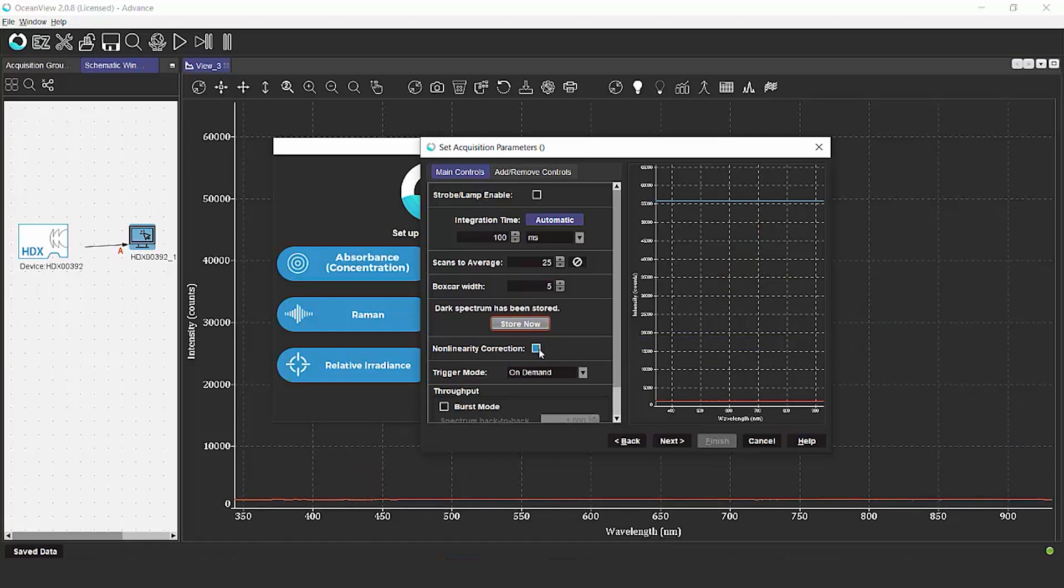Once you've collected your dark spectrum, the next step is to turn on linearity correction. We're just going to place a check in that check box, and that's going to give us the most linear data that we can get out of the spectrometer.